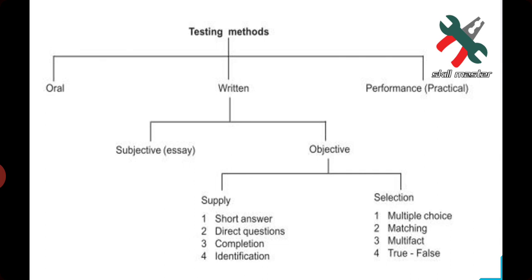The second type is the written test. The third one is the subjective type test — also called Type B — which is a lengthy test that you write. Next is the objective test. So we categorize here: objective test is divided into two types — first is supply, and next is selection.